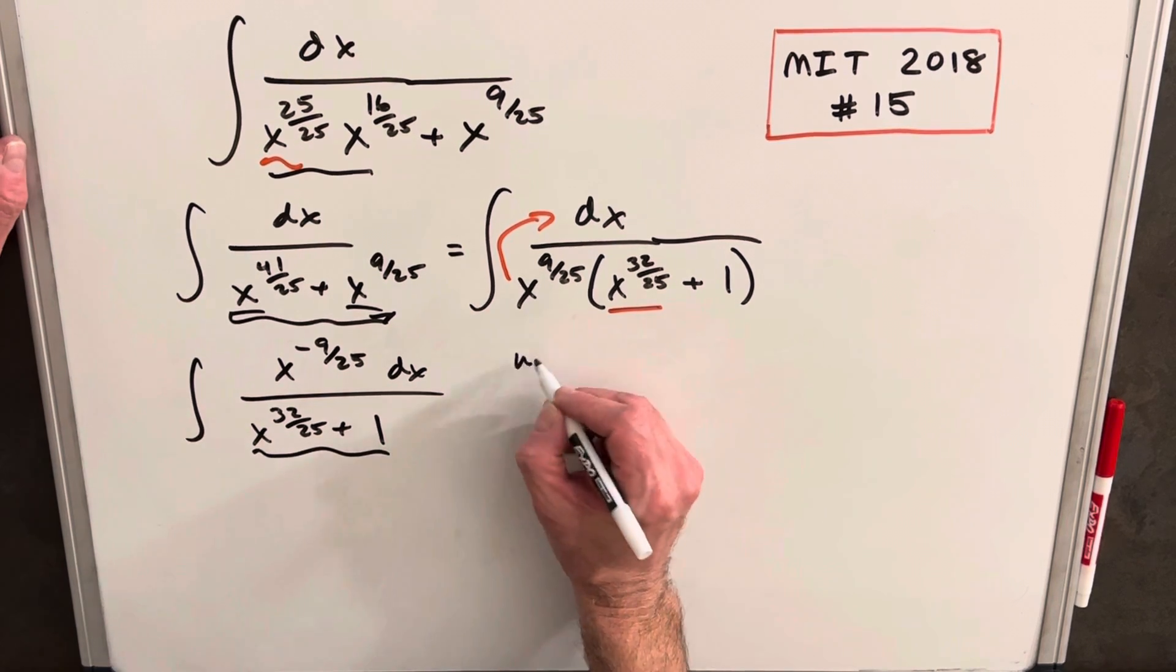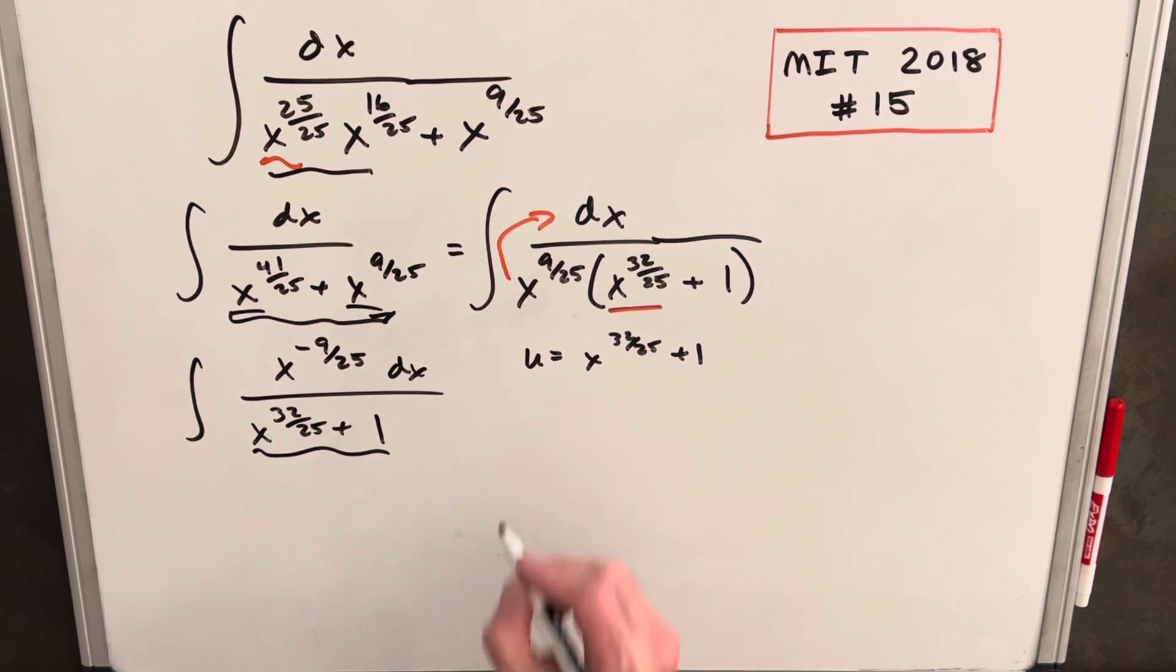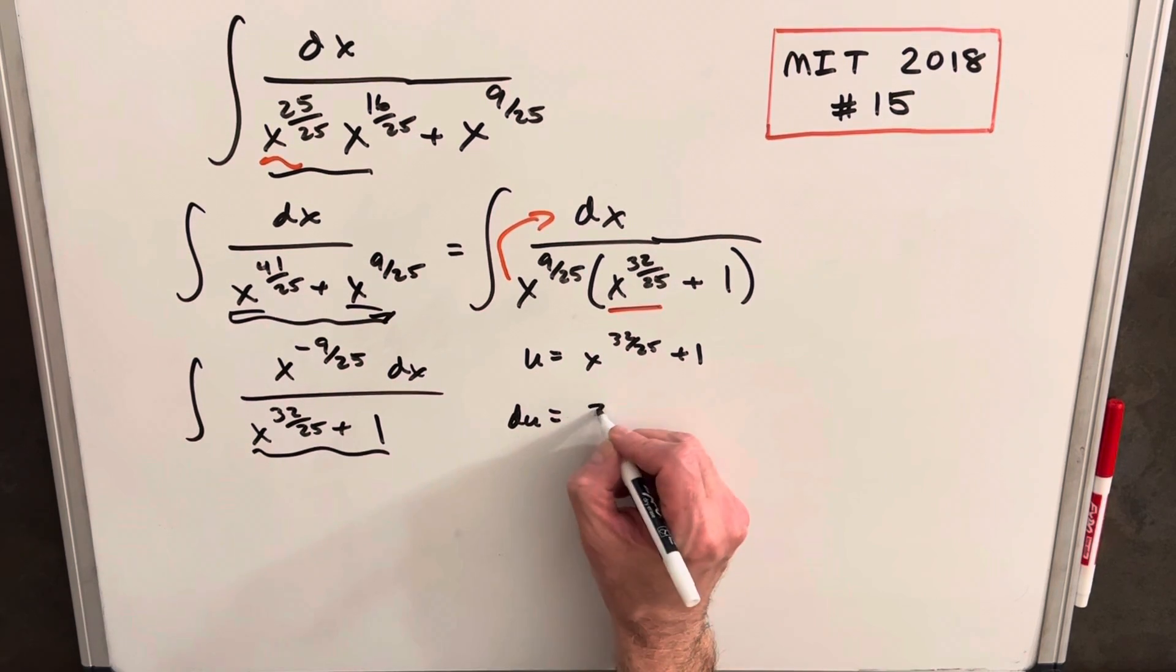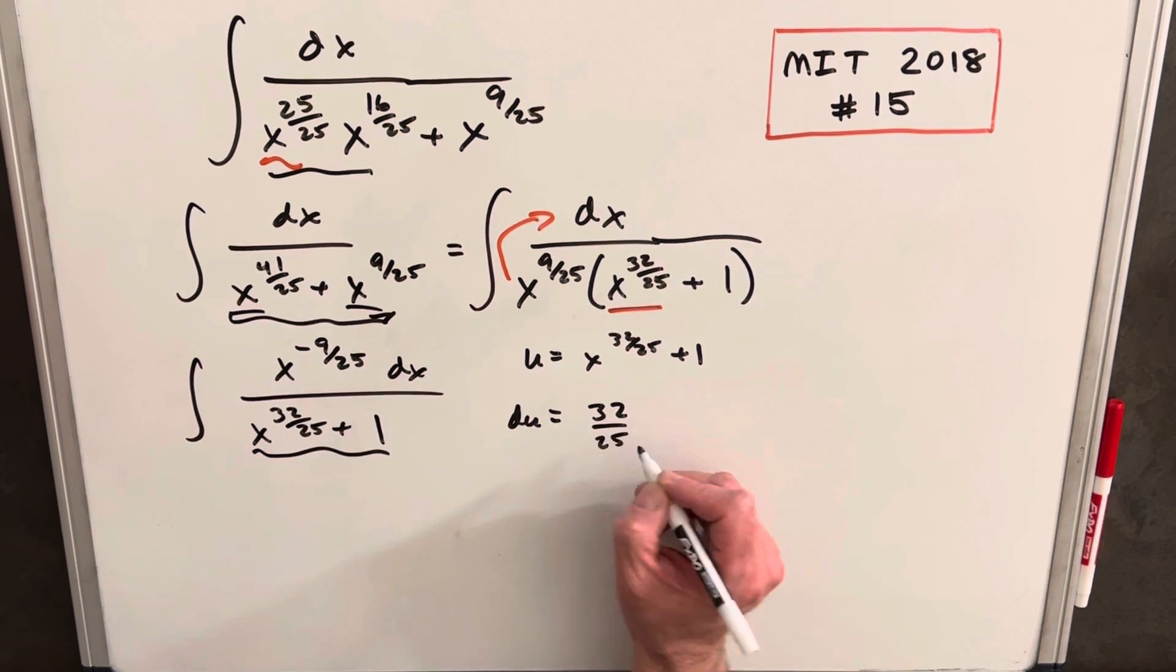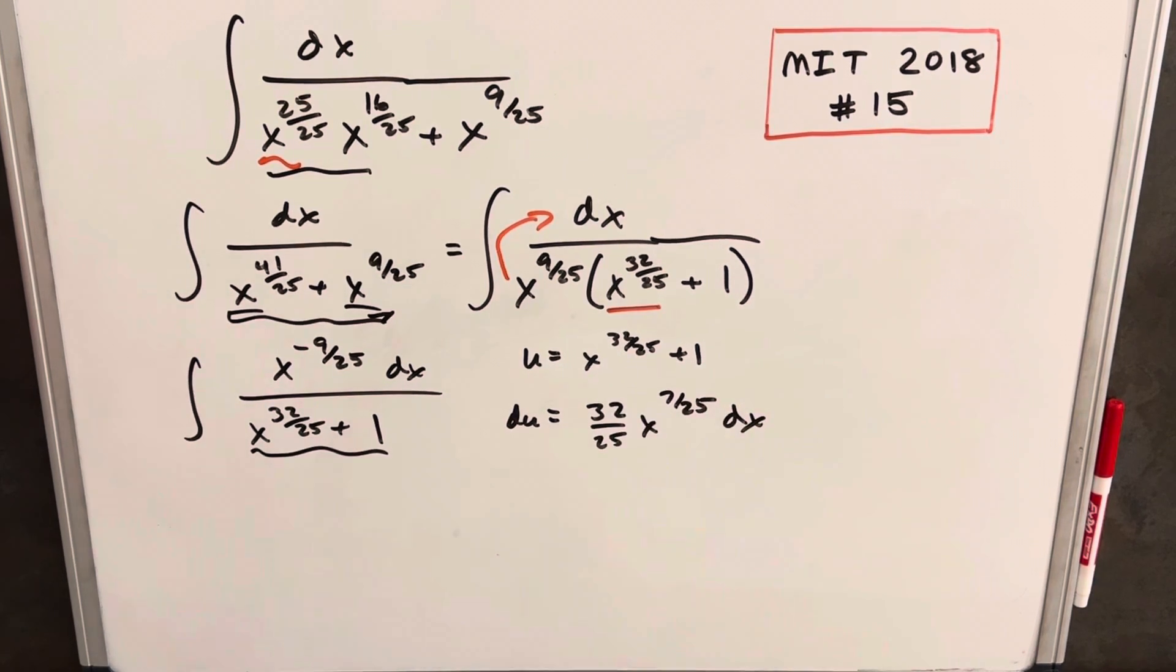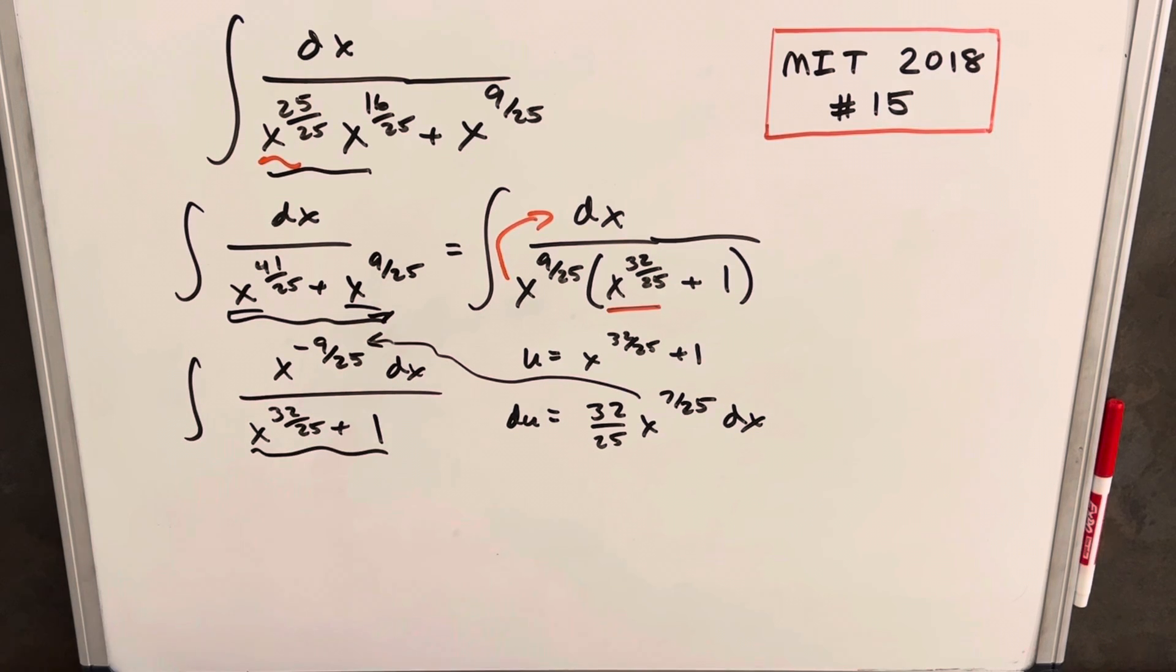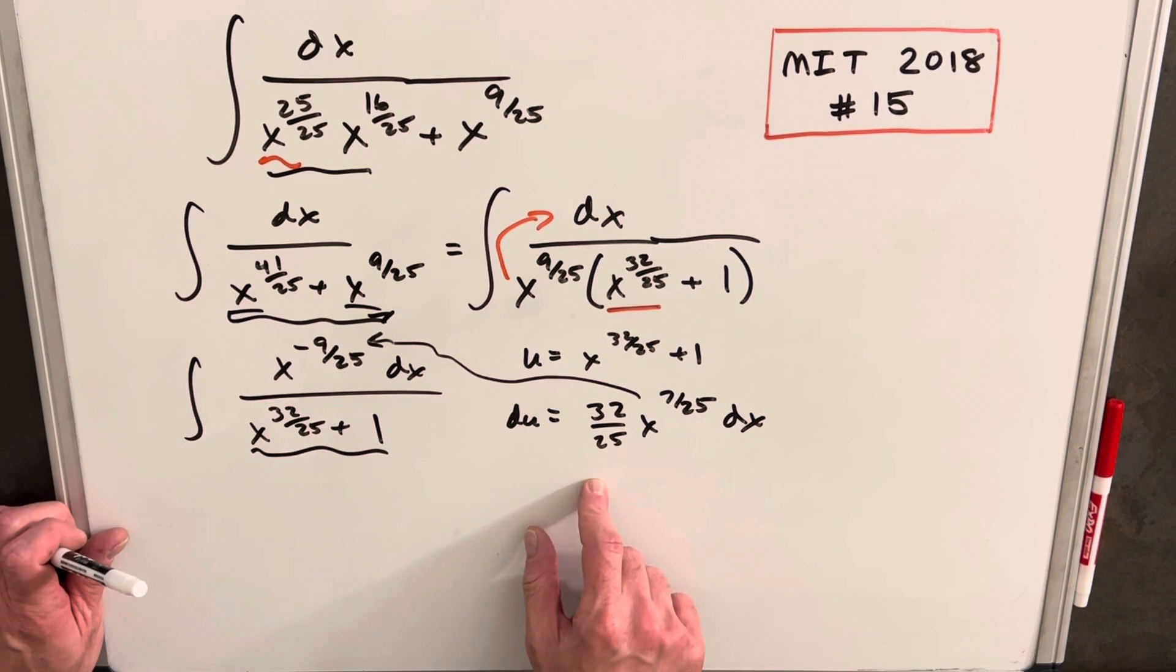Well, u equals x to the 32 over 25 plus 1, then we get our du: we're going to have 32 over 25 x to the 7 over 25 dx. The problem is this is really not lining up for what we'd like to have, a negative 9 over 25 up here. So I'm going to scratch this u-sub and try something else.